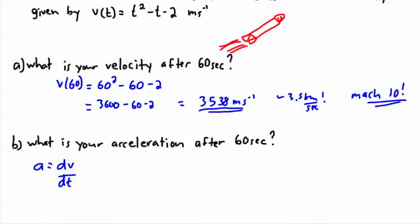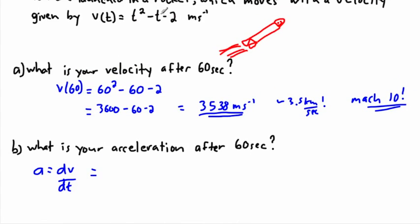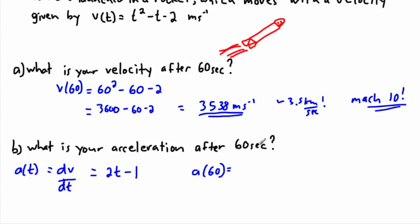Acceleration is dv/dt. Taking the derivative of v(t) = t² - t - 2: the derivative of t² is 2t, the derivative of -t is -1, and the constant -2 disappears. So a(t) = 2t - 1. Therefore a(60) = 2(60) - 1 = 120 - 1 = 119 meters per second squared.